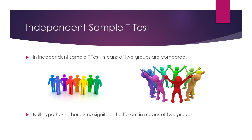Independent sample t-test is carried out when we want to compare the means of two different groups. Both the groups are different — for example, I want to compare the marks of section A and section B, or I want to compare process A with process B, department A with department B. Make sure that the number of groups is only two. The null hypothesis will be: there is no significant difference in the means of two groups.